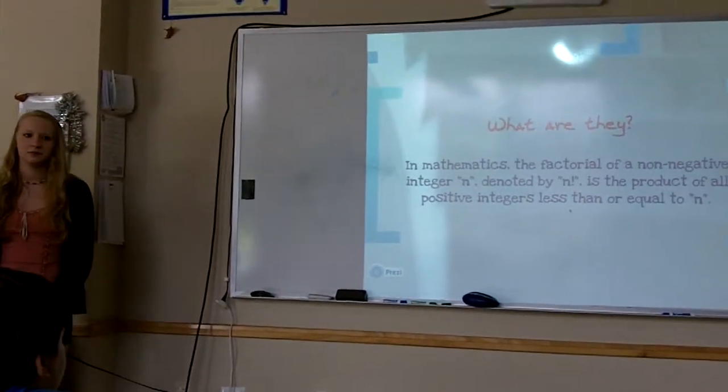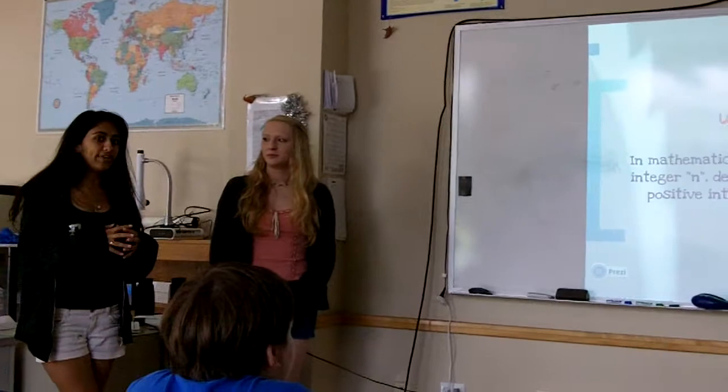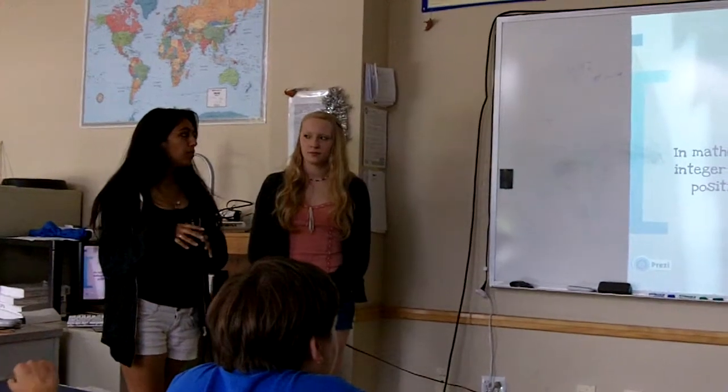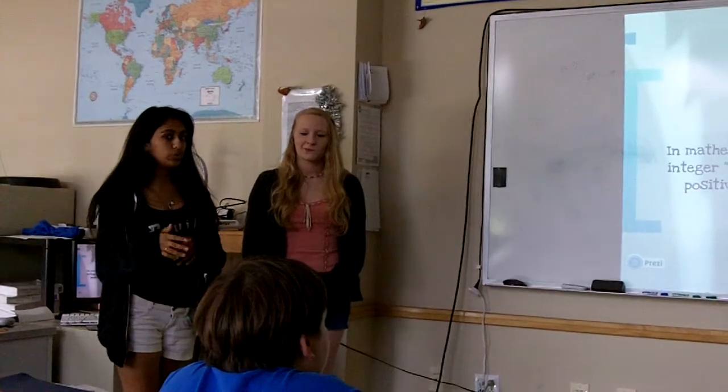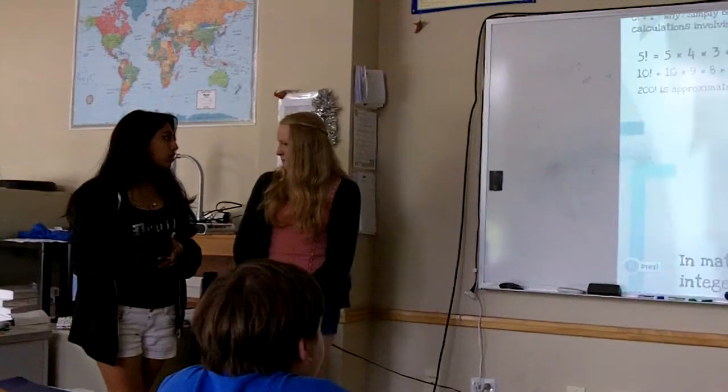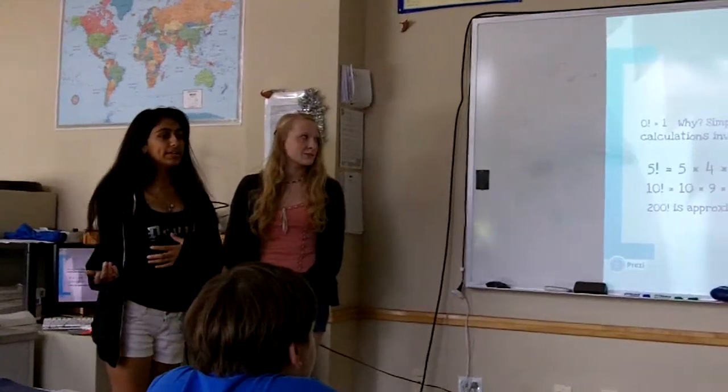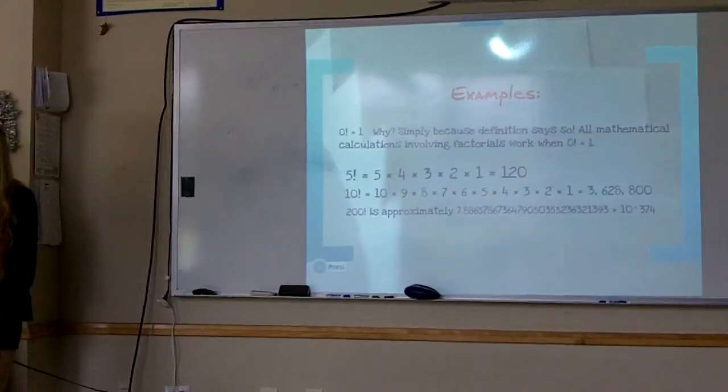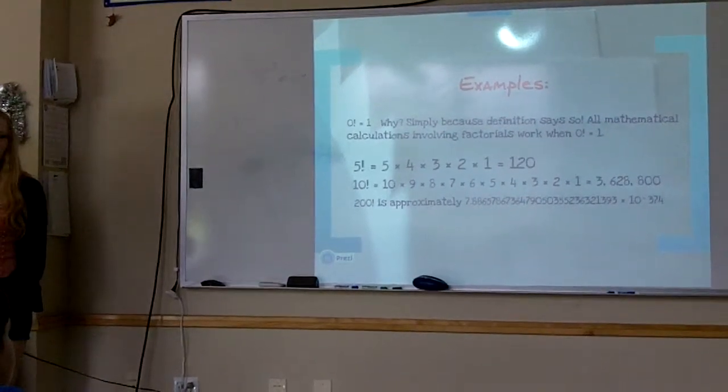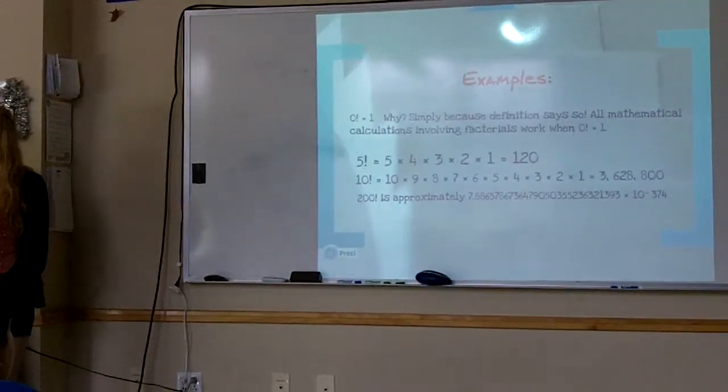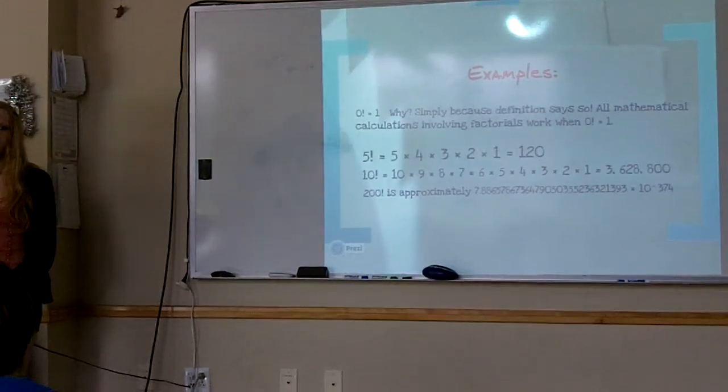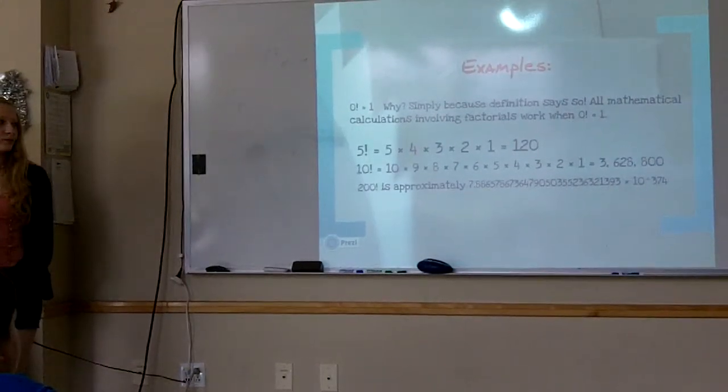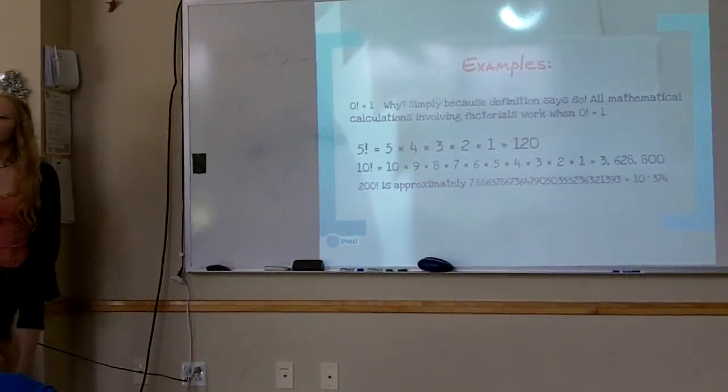The basic definition of a factorial is the factorial of a number denoted by n followed by an exclamation point, which is the product of all positive integers less than or equal to n. So 0 factorial is 1, and although it might seem as though 0 factorial should be 0 because there's nothing less than 0, it's just a simple rule. There's no mathematical explanation for it besides the fact that any calculation involving a factorial works when it's equal to 1.